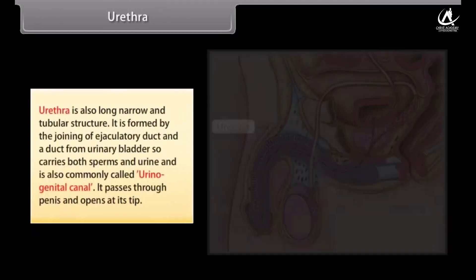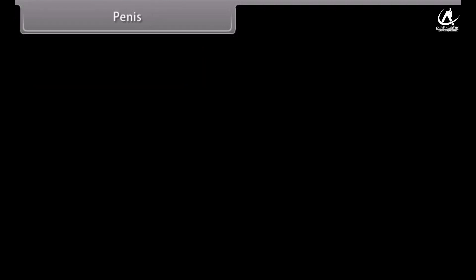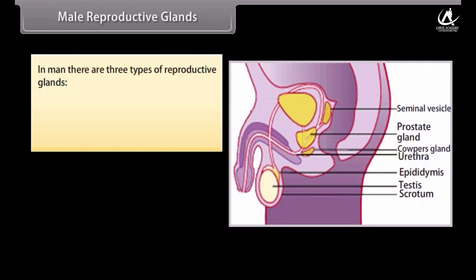The urethra is a long, narrow, tubular structure formed by the joining of the ejaculatory duct and duct from the urinary bladder, so it carries both sperms and urine, and is commonly called the urinogenital canal. It passes through the penis and opens at its tip. The penis is the external male genital organ — a cylindrical erectile copulatory organ with thick muscular walls. Its sensitive tip is called the glans, which is covered by a retractable skin fold called the prepuce.